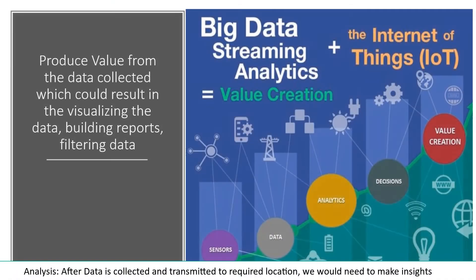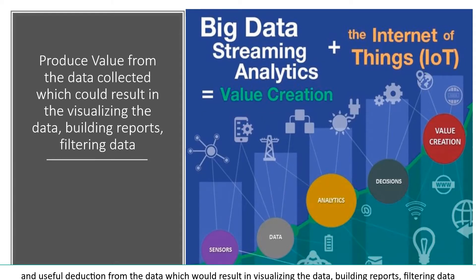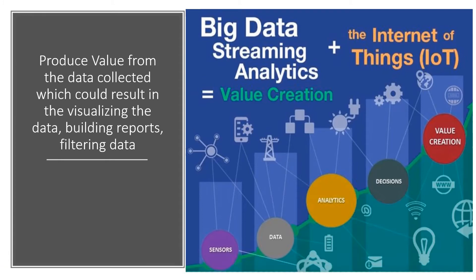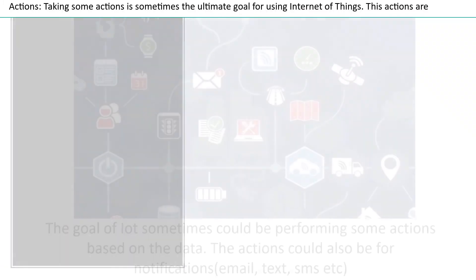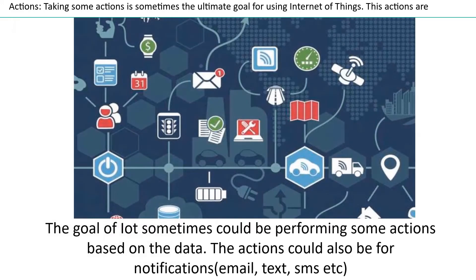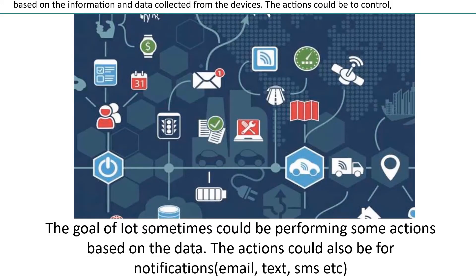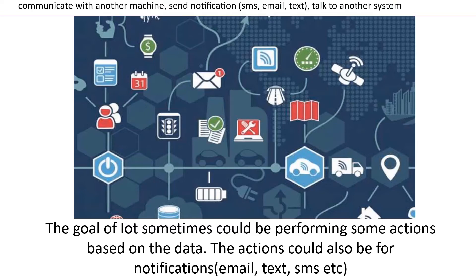Analysis: after data is collected and transmitted to the required location, we need to make insights and useful deductions from the data, which would result in visualizing the data, building reports, and filtering data. Actions: taking some actions is sometimes the ultimate goal for using Internet of Things. These actions are based on the information and data collected from the devices. The actions could be to control, communicate with another machine, send notifications — SMS, email, text — or talk to another system.